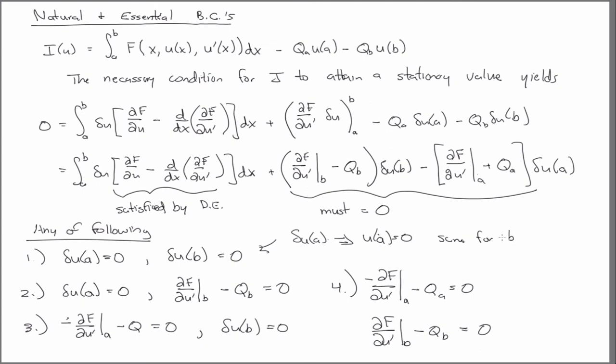Because again, these del U's in the calculus of variational sense are supposed to be arbitrary. And if you specify in the problem statement that they're not, then they can't be arbitrary. They have to be zero.